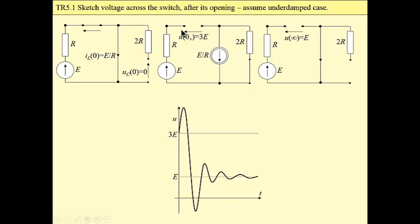So for t equals zero plus, voltage across the switch is 3E. At infinitely large time in steady state condition, coil is a short circuit and capacitor is an open circuit, then this voltage is E. The correct answer is from 3E to E.